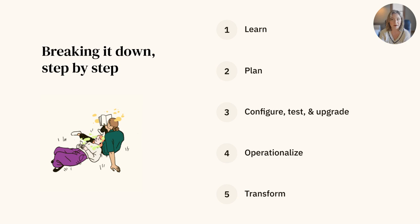The five steps are: plan and map how the tool can be implemented across your team; configure, test, and upgrade — make sure that the channel is built to your standards to match your workflow goals; operationalize, or learn more about how the tool can be improved in practice; and finally, transform your customer experience.